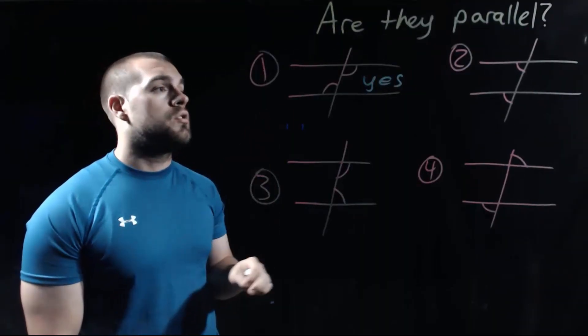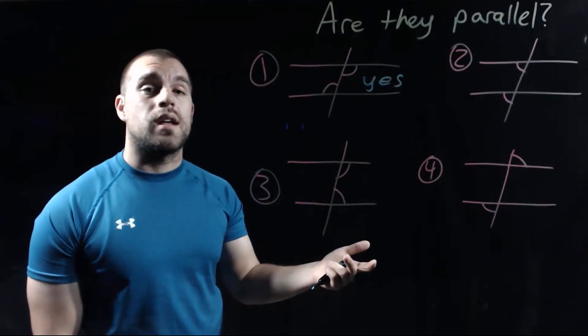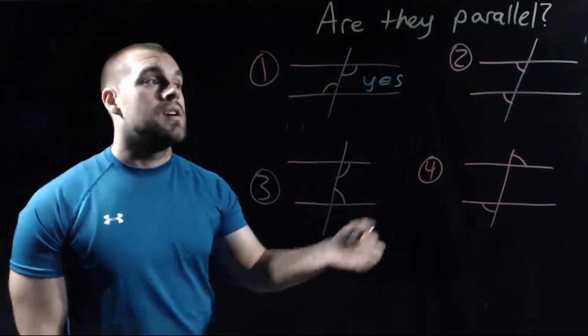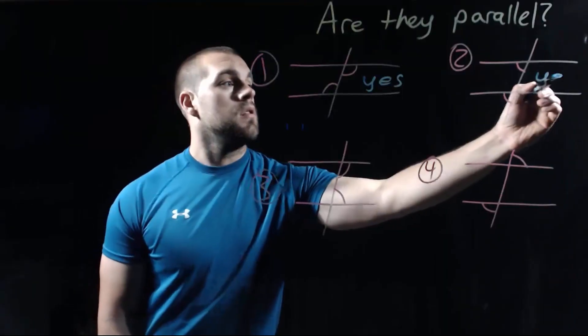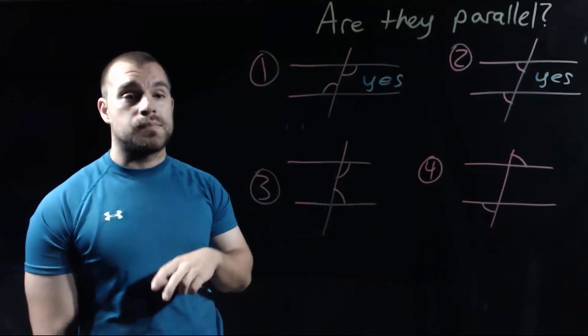If we take a look at number two, we've got arcs saying that these two angles are congruent. If we were to classify those things, those would be corresponding angles. So this one is also going to be yes, those two lines are parallel because we have corresponding angles being congruent.